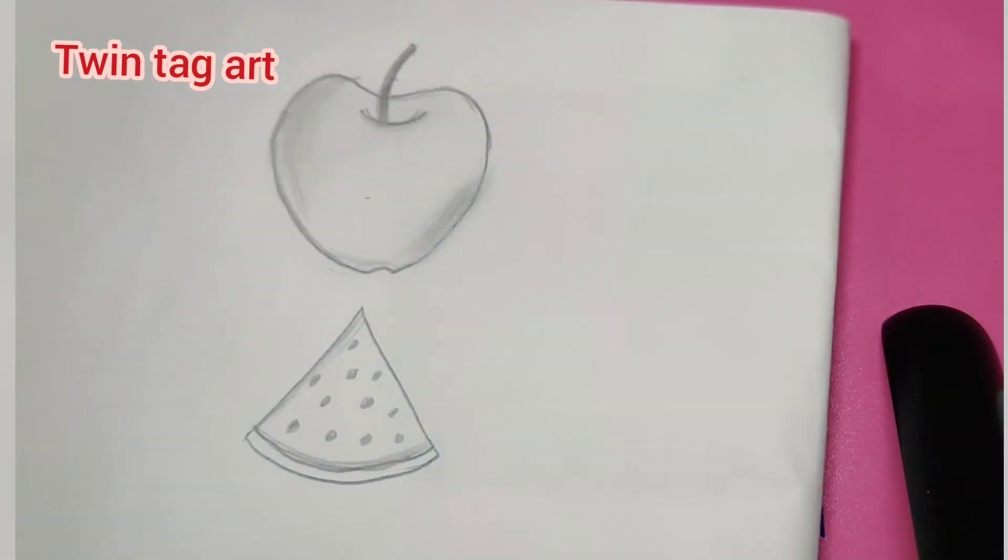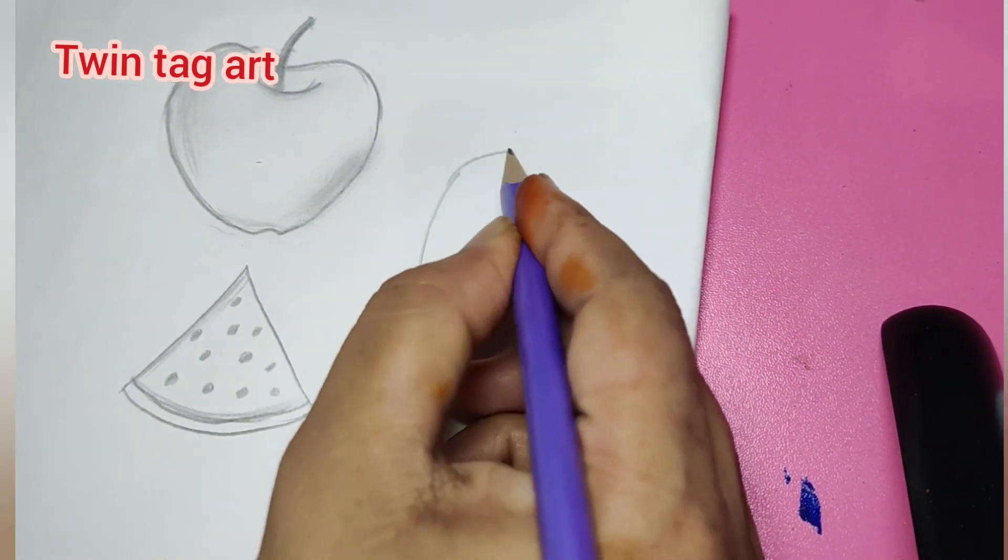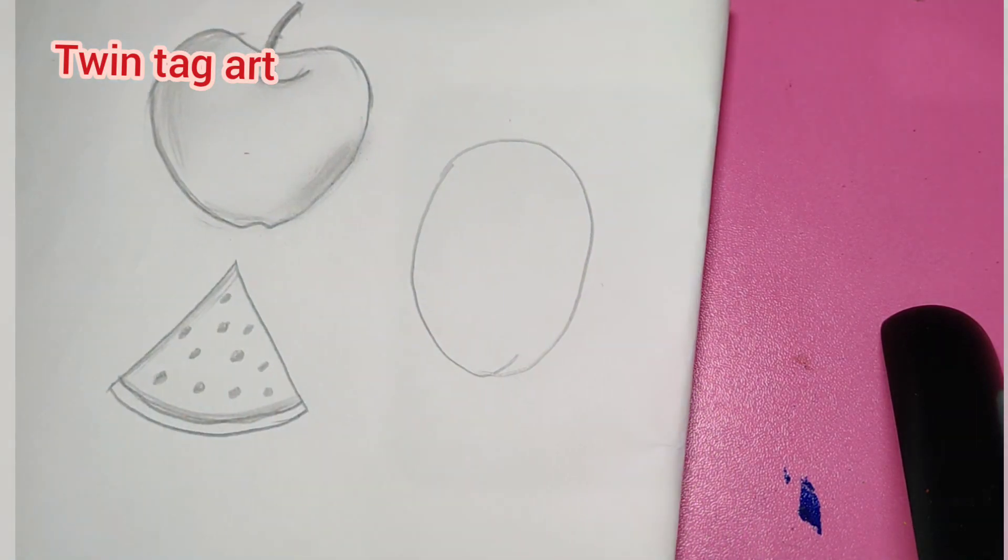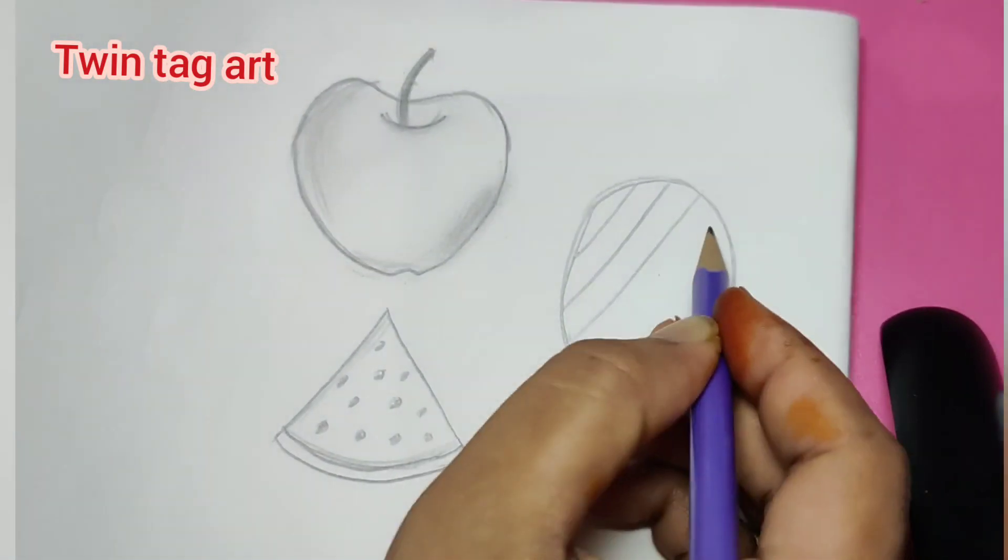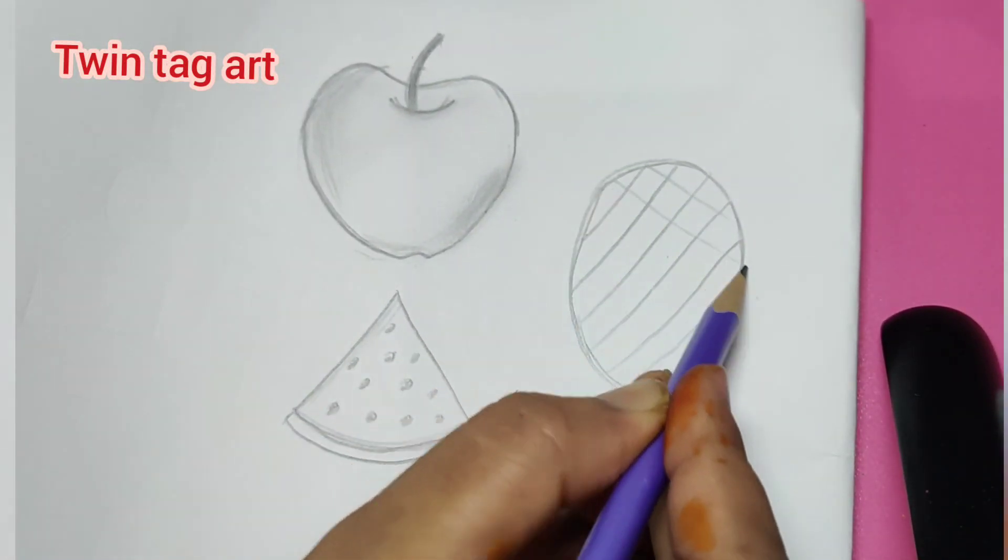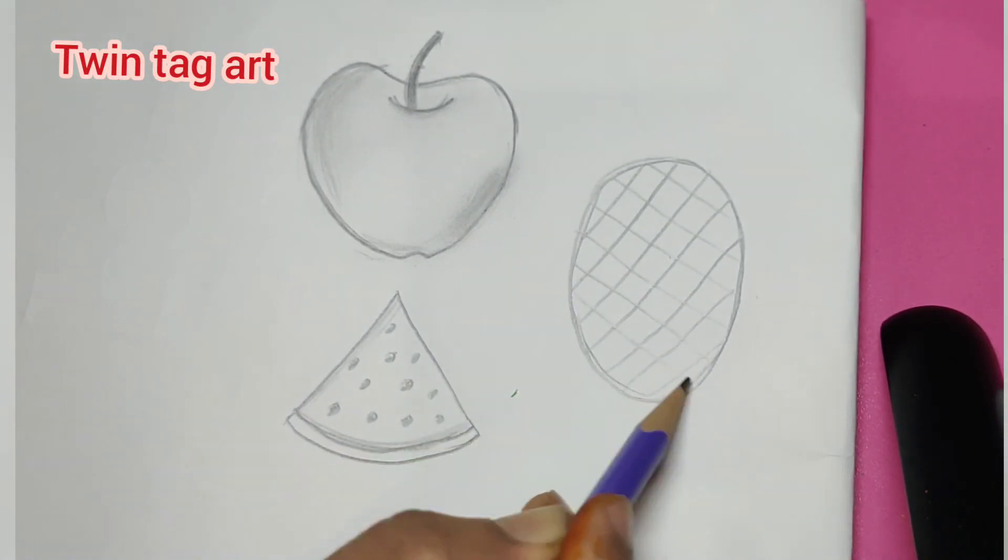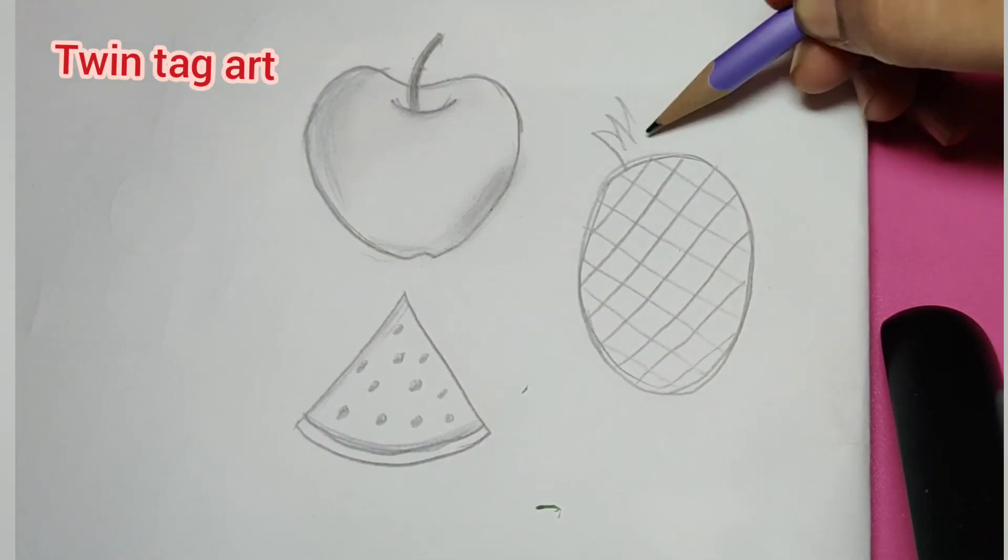We try to use different shapes to make objects. Let's draw an oval shape. Here we draw a pineapple and add details first.